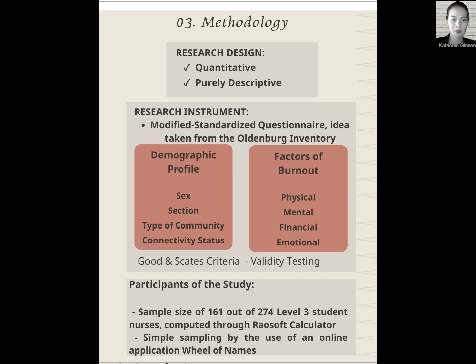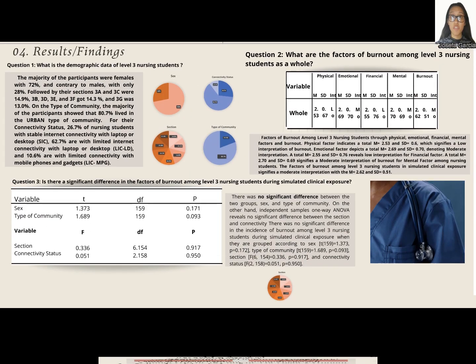The 161 sample size was computed using the RASOF calculator. After the participants were stratified according to section, simple sampling was employed to randomly select participants from each section by the utilization of the Wheel of Names online application.